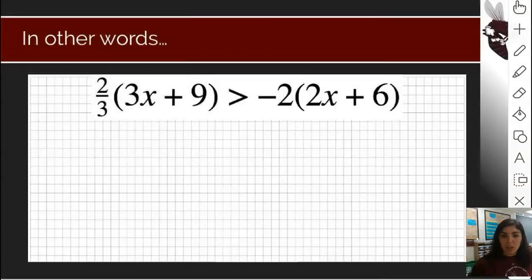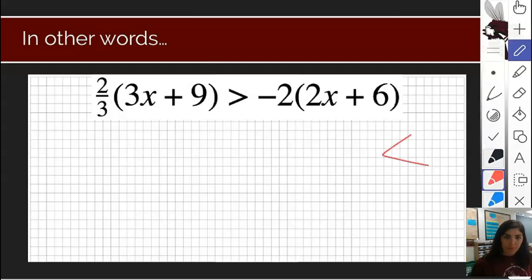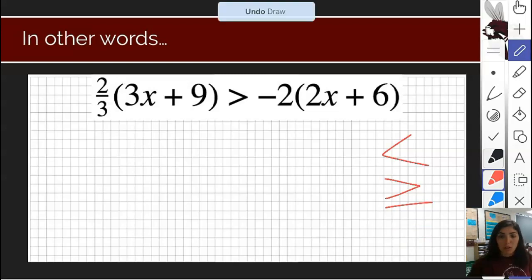A problem for a linear inequality will look very similar to an equation, except that instead of an equal sign, you're going to have one of the four inequality symbols: greater than, less than, greater than or equal to, and less than or equal to. The rules for all of these stay the same as long as you know how to use them.